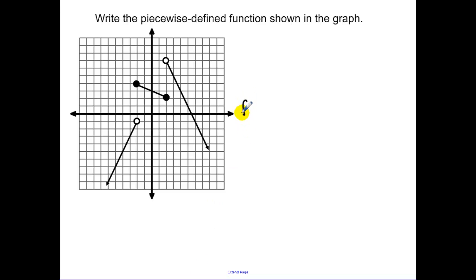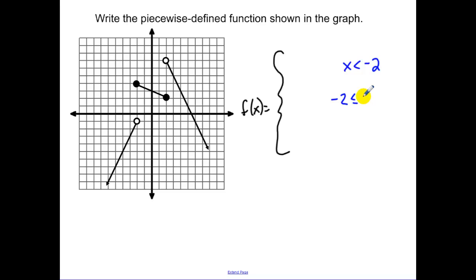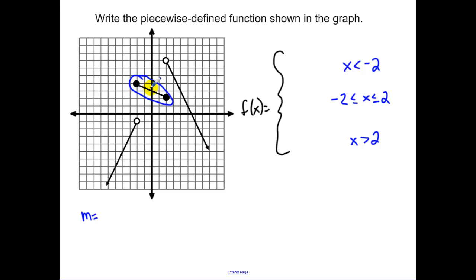For three functions: the breaking points are at negative 2 and positive 2, giving three intervals with filled-in holes. The middle function has a slope of negative 1 half and a y-intercept of 3, so it's negative one-half x plus 3 for negative 2 less than or equal to x less than or equal to 2.